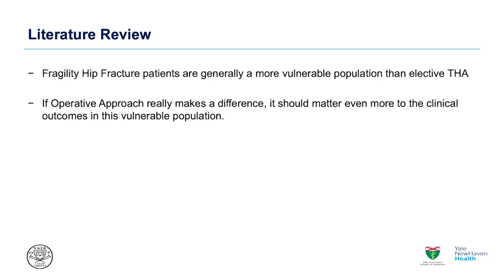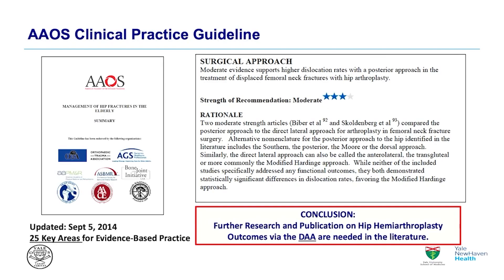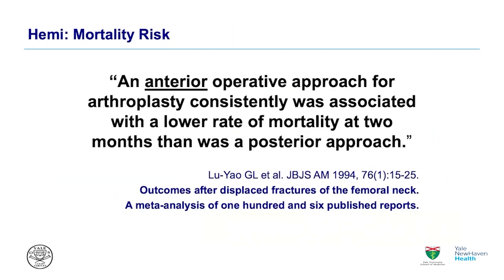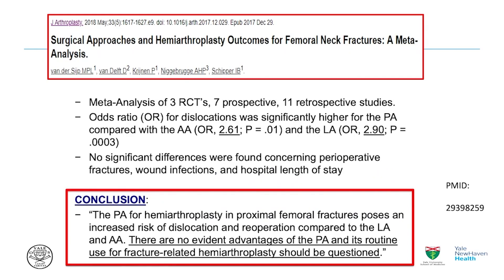A brief literature review: I think this is a more vulnerable population than elective hips, and if operative approach matters, it should matter even more here. The AOS guideline from 2014 gave a three-star moderate recommendation that surgical approach does matter. The mortality risk is lower with an anterior operative approach — published back in 1994, comparing anterior capsular to posterior approaches. A great 2018 meta-analysis of randomized controlled trials shows no evident advantages of the posterior approach, and its routine use for fracture-related hemiarthroplasty should be questioned. The dislocation rate was significantly higher for posterior, with a 2.61 odds ratio against anterior.